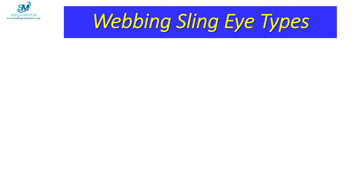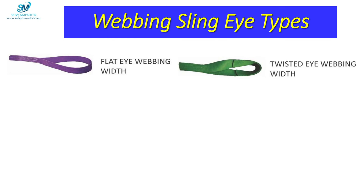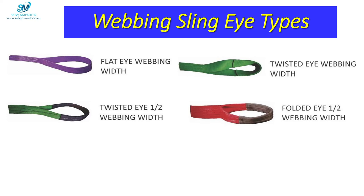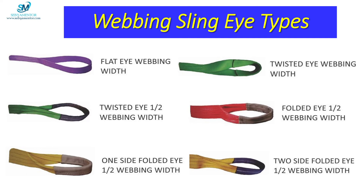Now let's go forward and see the various types of web sling. The 1st one is flat eye webbing. The 2nd one is twisted eye webbing. The 3rd one is twisted eye webbing. The 4th one is folded eye webbing. The 5th one is one-side folded eye webbing. The 6th one is two-sided folded eye webbing.